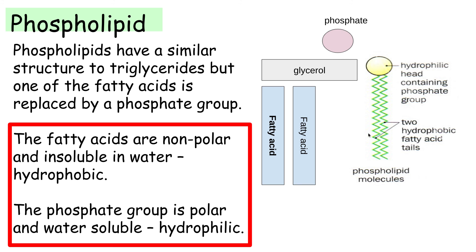A phospholipid is slightly different — a really good exam question would be to compare the structure of a phospholipid and a triglyceride. In the left-hand diagram, I have two fatty acids instead of three. Instead of a third fatty acid, I have a phosphate group attached to the glycerol. The phosphate group is polar, so it creates a water-soluble area — this part with the glycerol and phosphate group is known as the hydrophilic head, which orientates towards water. The fatty acid chains are non-polar and insoluble in water — these are hydrophobic tails which orientate away from water.